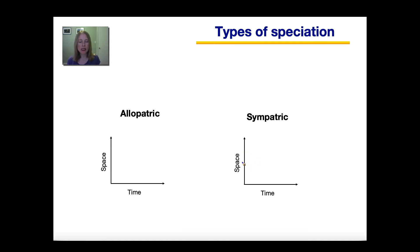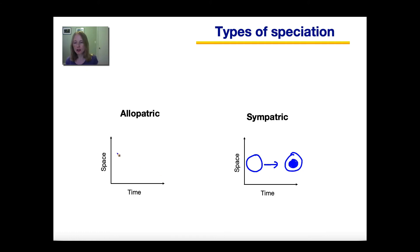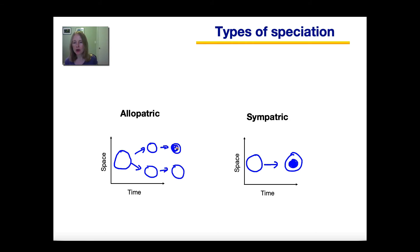In this simple graph, you have space on the y-axis and time on the x-axis. Let's say we have an ancestral population living within a particular geographic area. Over time, new species may arise — shown here in the filled-out circle — and this new species arises within the same geographic area. In contrast, with allopatric speciation, you have an ancestral species that becomes geographically separated into two populations. Over time, these two populations become different from each other and are now different species.